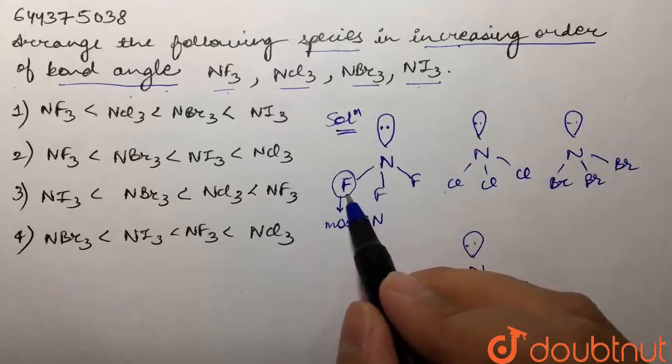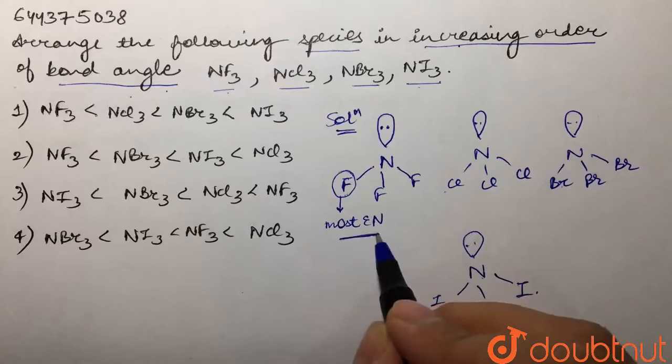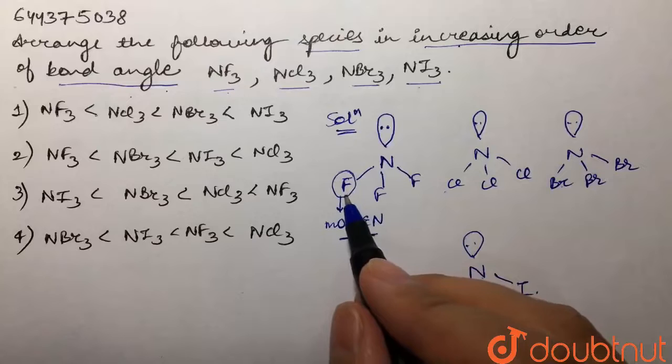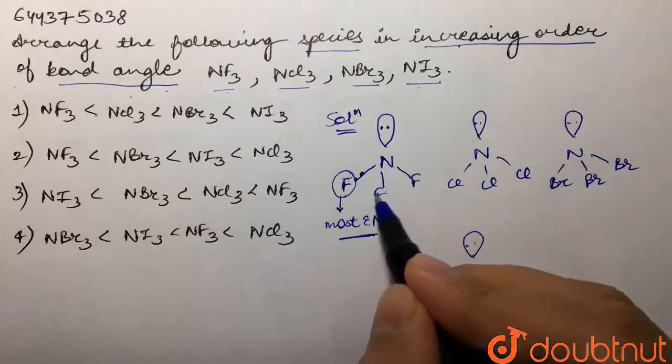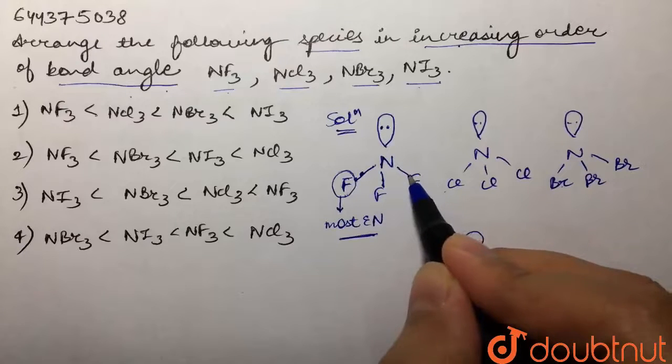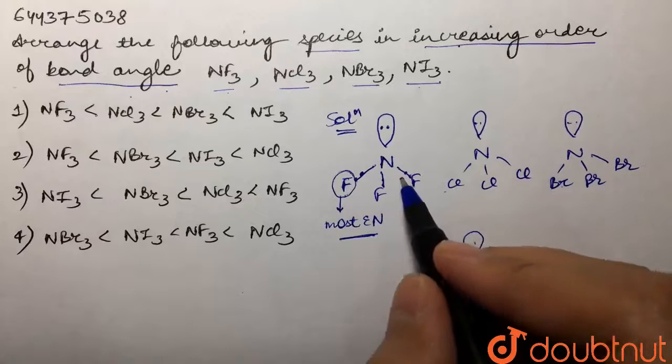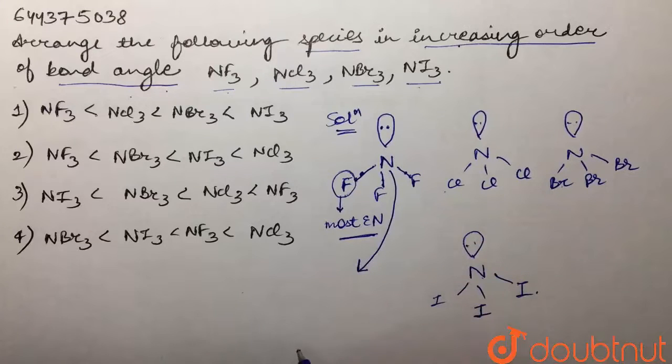The fluorine is the most electronegative one, and what does it mean? That it would have the greatest tendency to attract the shared pair of electrons towards itself. So the electrons would be present near fluorine. So we can say that there would be least crowding near nitrogen.